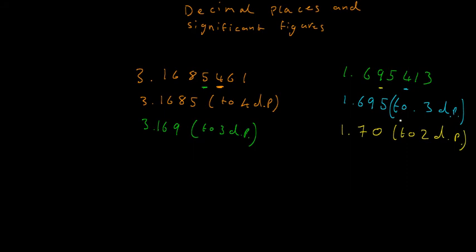So we'd get 1.70 to 2 decimal places. It's important to put that 0 in because you've been asked to put it to 2 decimal places. You need to display the answer to 2 decimal places, even if it is a 0, because it's showing you the precision of your answer. When you have to round up a 9, you add 1 to the next unit over. So that 5 makes that 9 a 10, but we can't display a 10 there, so that 1 moves that 6 up 1 unit.